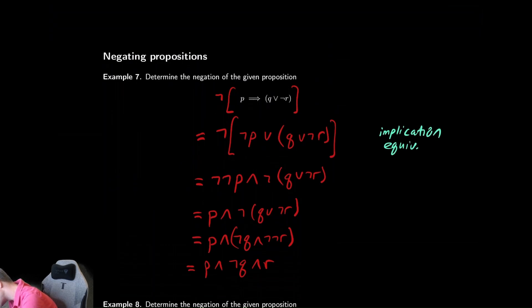You could write down that we used the De Morgan's laws here, De Morgan, then double negation, then double negation, and then we use De Morgan again, and then double negation again.